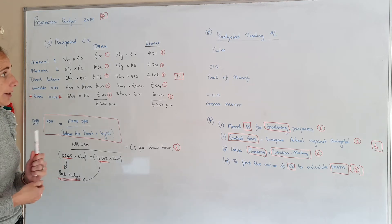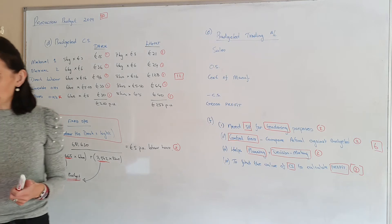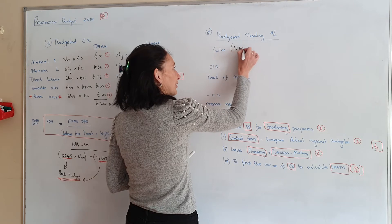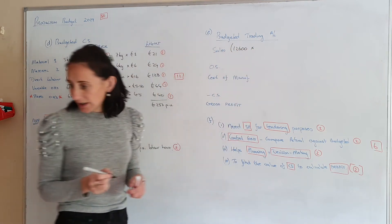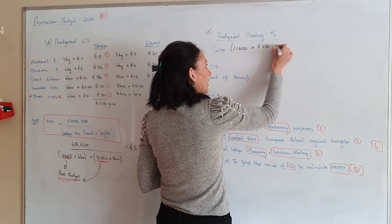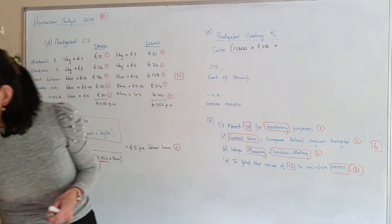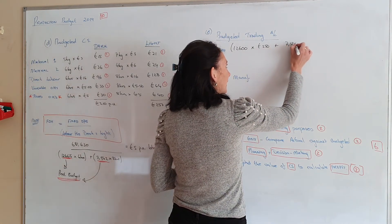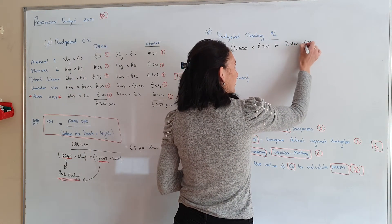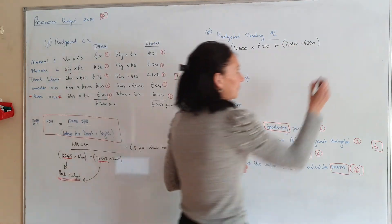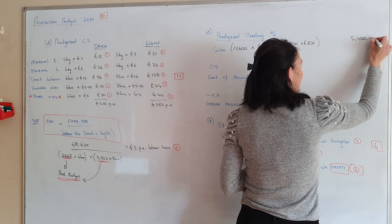Okay then you're going to do your budgeted trading account. You're going to do how much you expect to sell. Now remember I told you to highlight this at the start. So you're expecting to sell 12,600 of dark. And you're going to sell them hopefully at €250. Plus you expect to sell 7,500 of light. And you expect to take in €300 for each one of those. So your expected sales is €5,400,000.